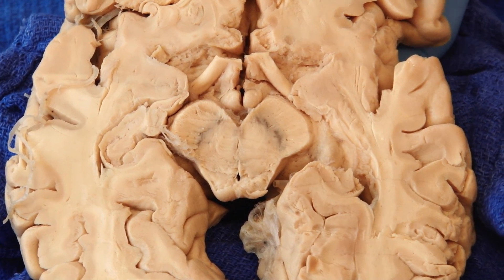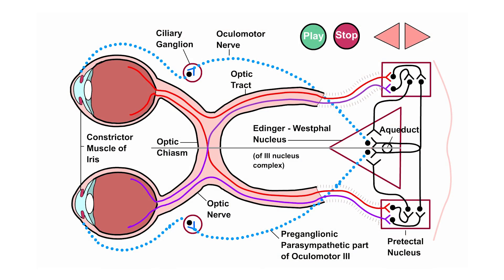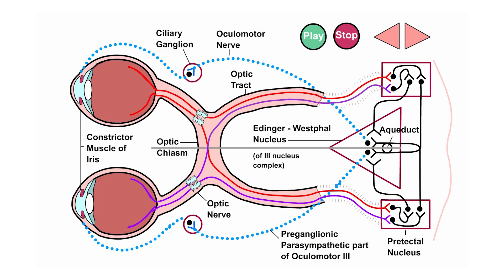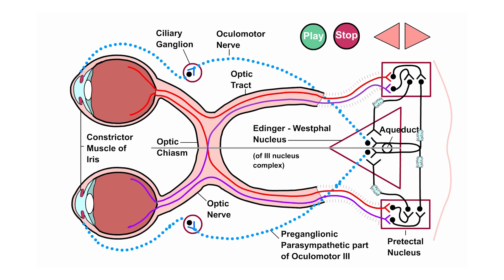Let's look at it in another view. I want to show you an animation that shows this circuitry with the afferent information coming in from the optic nerve and the efferent motor information coming out through the Edinger-Westphal nucleus, the third cranial nerve, out to the ciliary body, and out to the smooth muscle of the pupil.